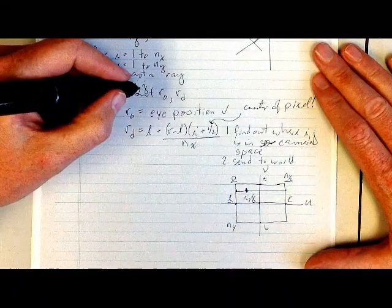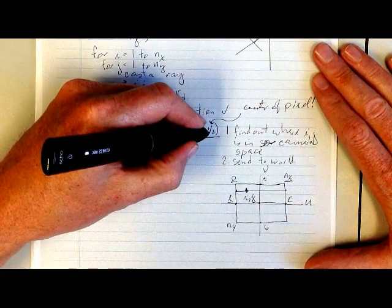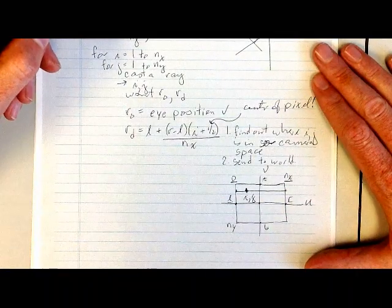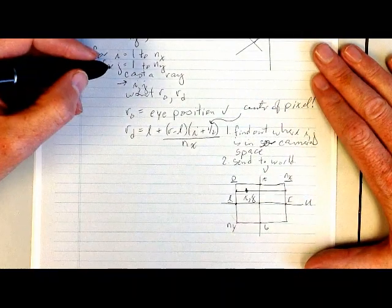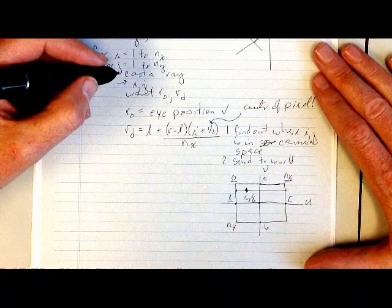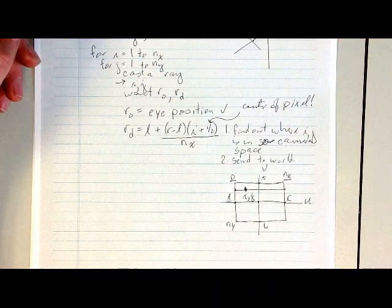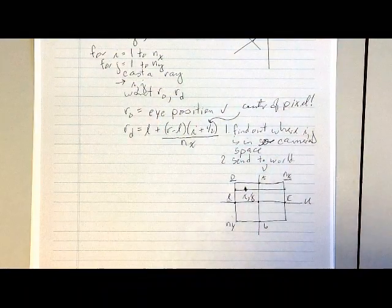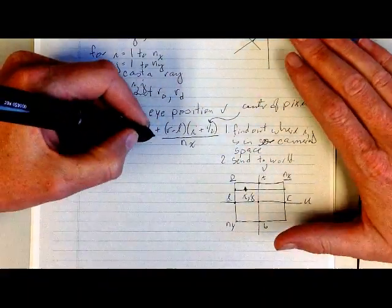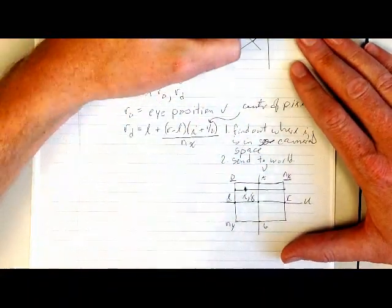So looking just at the horizontal direction, what we're doing is we're saying the screen space goes from 0 to the number of pixels. The camera space goes from left to right along the u axis in camera space. That's the v axis in camera space.